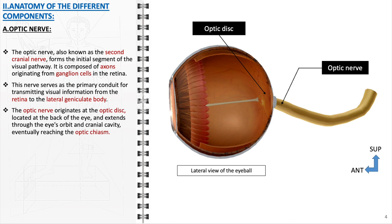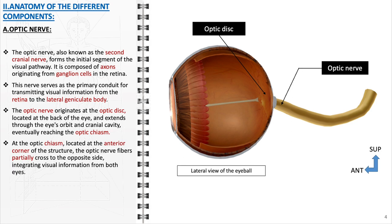As the nerve progresses, it carries vital visual signals from the retina and moves posteriorly towards the brain. The path of the optic nerve is characterized by a slight arc to accommodate eye movement. Upon reaching the optic chiasm, located at the base of the brain near the hypothalamus, the optic nerve fibers undergo a partial decussation or crossing. The fibers from the nasal, or medial, half of each retina cross to the opposite side, ensuring that visual information from the right field of view of both eyes is processed in the left hemisphere of the brain, and vice versa. This anatomical arrangement is pivotal for binocular vision and depth perception. After crossing at the chiasm, the fibers continue as the optic tracts.